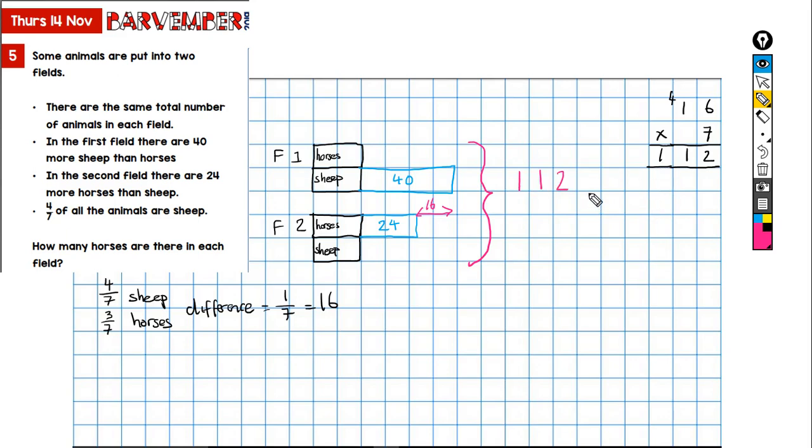So that's the total number of animals in both fields. From that then I can work out how many animals there are in each field, so if I divide 112 by 2 which gives me 56, that tells me how many animals are in each field. So 56 animals in total in this field and 56 animals in total in this field. I hope you're with me so far.